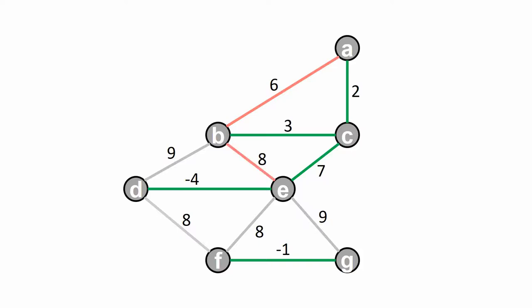We are not allowed to pick edge BE because if we do so, then we would create a green cycle again. The other edges with weight 8, namely DF and EF, are fine. For those edges we have a choice. I pick edge EF.